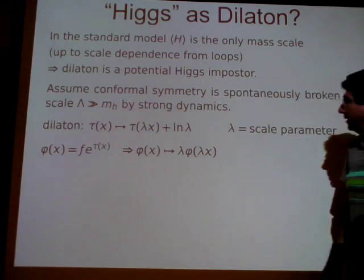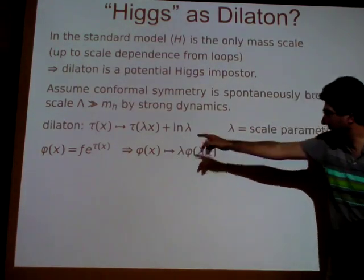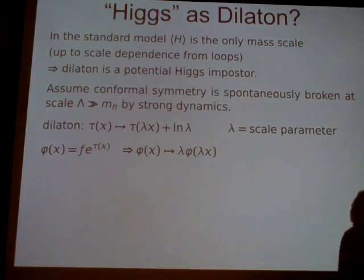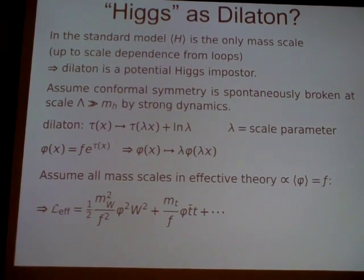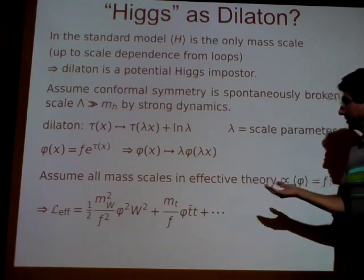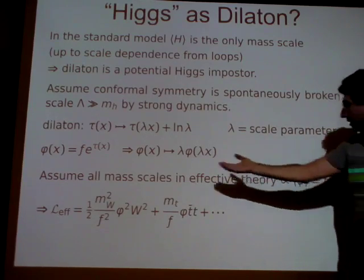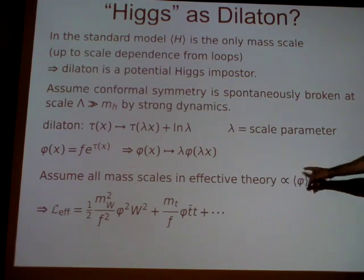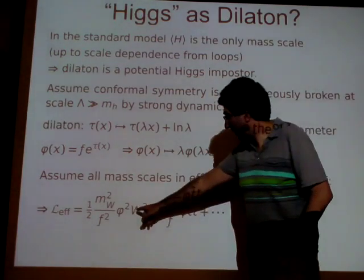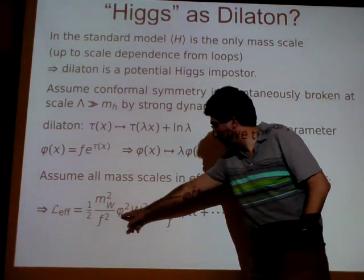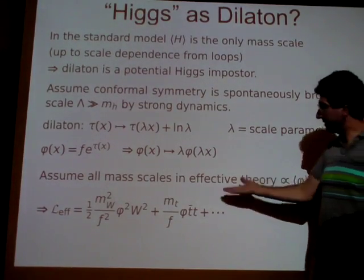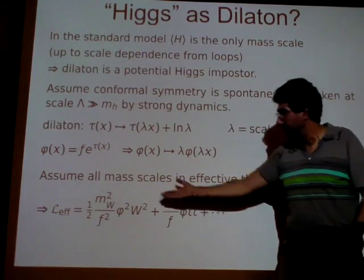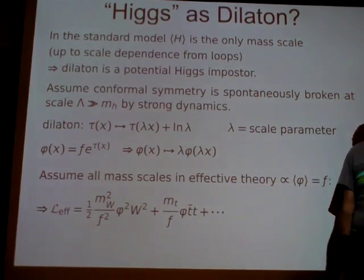Basically, e^τ is something that transforms like an ordinary scalar under scale transformations — an ordinary dimension-one scalar. The assumption that scale symmetry is spontaneously broken means that all mass scales in the effective theory are proportional to the VEV of φ. So for example, the mass of the W is proportional to φ², the mass of the top is proportional to φ, and so on — which is exactly what we get in the standard model where φ is the Higgs. We also get this kind of coupling, so we see that if we have a dilaton, it couples to mass just the way that a standard model Higgs does.